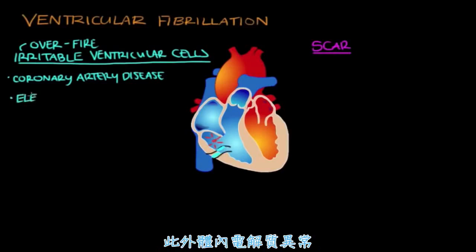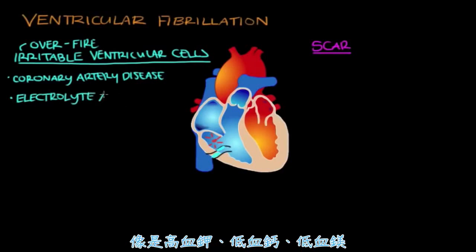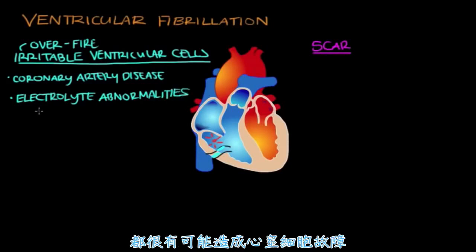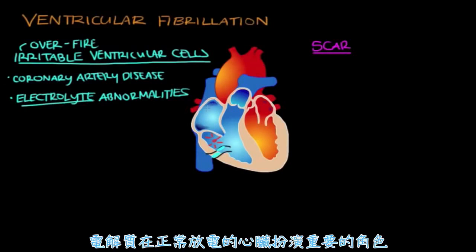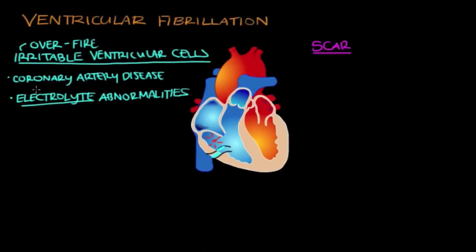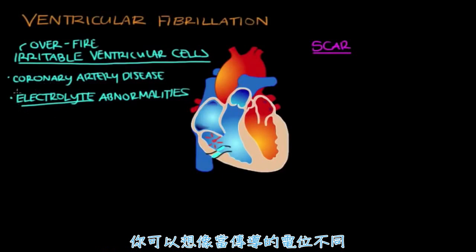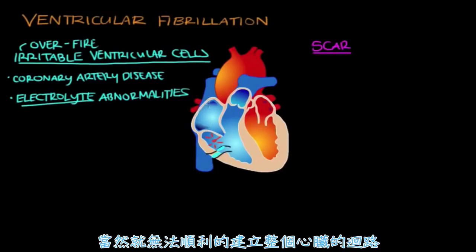Certain electrolyte abnormalities — like high potassium, low calcium, or low magnesium — might also cause ventricular cells to become irritable. Electrolytes play an important role in normal electrical conduction in the heart, and if they're not at the right levels, this can disrupt normal electrical conduction.